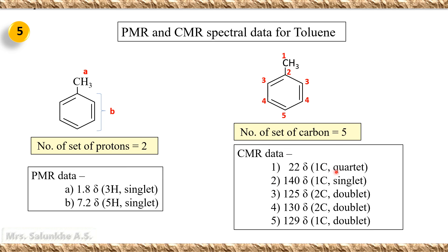For the methyl group carbon in toluene, we get a quartet at 22 delta. For carbon-1 (the ipso carbon, bearing no hydrogen), it gives a singlet at 140 delta. For carbon-2 (two equivalent carbons, each bearing one hydrogen), we get a doublet. Similarly, carbon-4 (two equivalent carbons) gives a doublet, and carbon-3 (the para carbon, one carbon) also gives a doublet. Thus, with the help of PMR and CMR spectra combined, we can easily identify the correct structure of an organic compound.